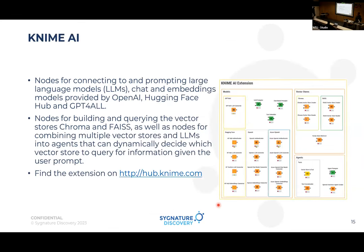Today we'll look at ChatGPT integration. You need the API access provided by OpenAI, Hugging Face Hub, or GPT4All — these APIs can be integrated into KNIME. There's also functionality for building and querying vector stores using ChromaDB — we have applications in proteomics and protein structures using Chroma. There are nodes for combining multiple vector stores and LLMs into agents, all findable at hub.knime.com.